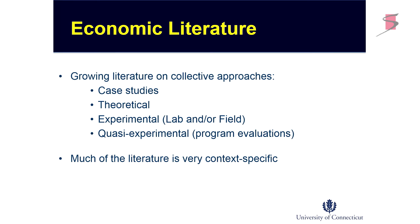There is a large and growing literature on this that has various dimensions: case studies, theoretical work, and experimental work — lab or field experiments — that Alex referred to. There's also some quasi-experimental work that has tried to look at whether collective approaches have actually been effective in improving environmental performance. Much of the literature is very context-specific — the literature on agricultural non-point pollution is separate from the literature on hazardous waste management, separate from the literature on fisheries. Yet I would argue there's a common thread and that we would learn something by integrating these various contexts under a single framework.